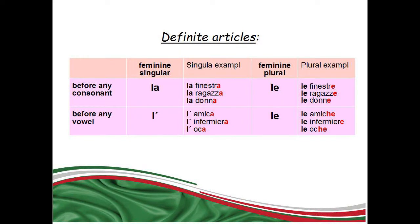L'apostrophe is used before a feminine singular noun starting with any vowel: l'amica, l'infermiera, l'oca. The plural form of L'apostrophe is LE: le amiche, le infermiere, le oche.